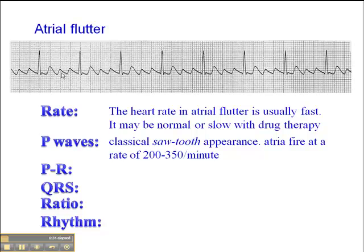The hallmark of atrial flutter is really the classical sawtooth appearance of the P waves. Here's that sawtooth appearance in atrial flutter — we can see it here. The atria are firing at a rate between 200 and 350 times per minute. What we don't see is a P wave that actually goes through the QRS — there's a flutter wave buried right inside the QRS.